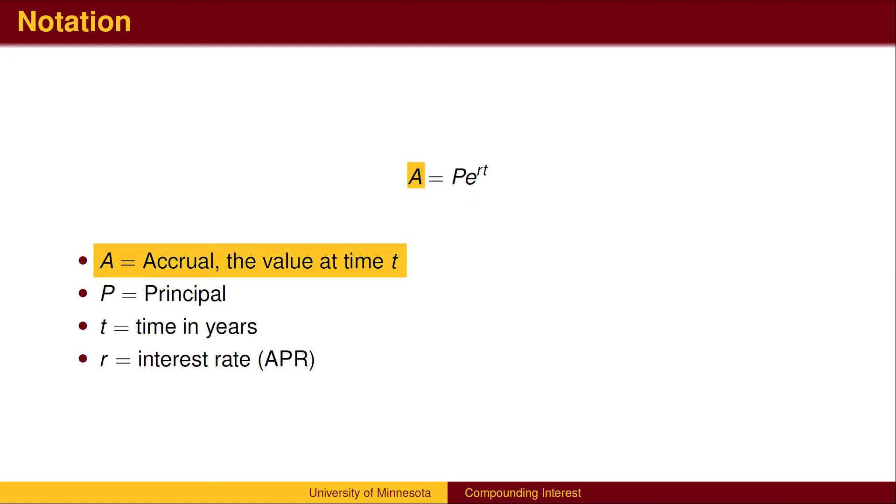A stands for the accrual, the amount that an investment is worth in the future. P is the principal, the amount of money that is invested initially. T is time, measured in years. R is the annual interest rate, otherwise known as the annual percentage rate, or APR.